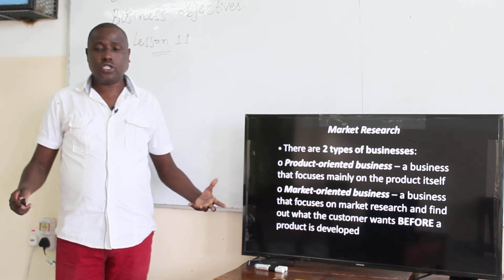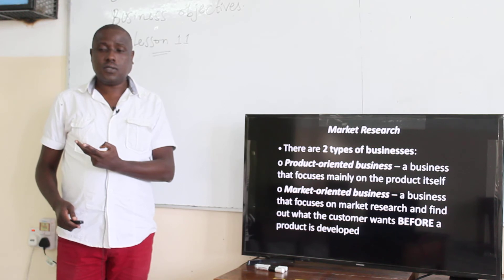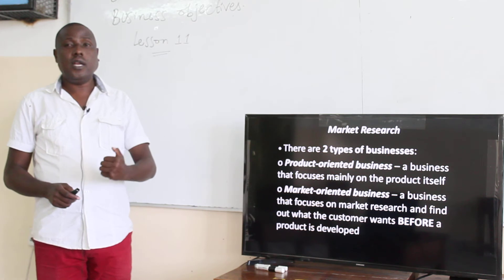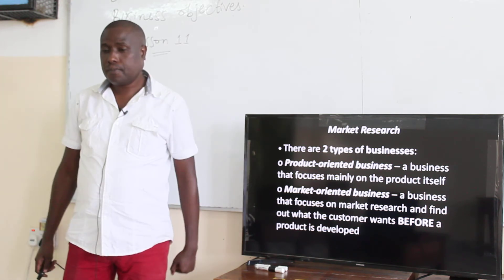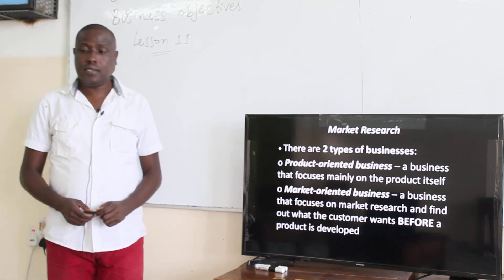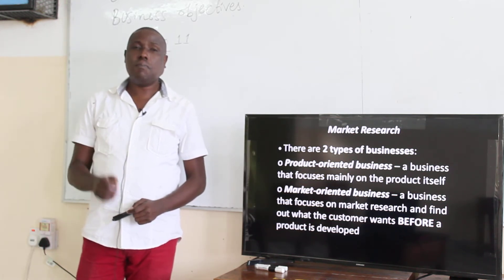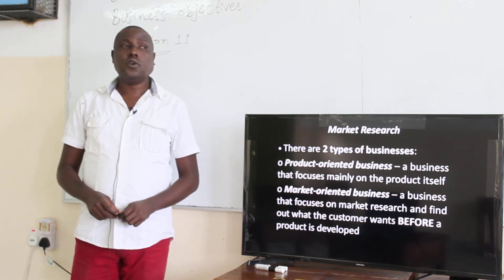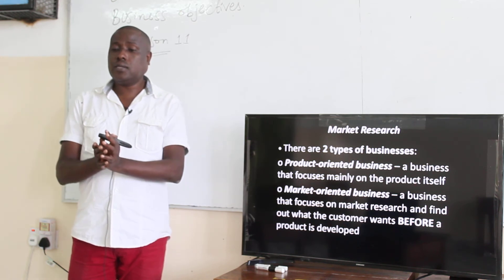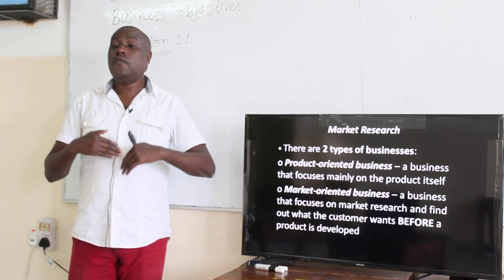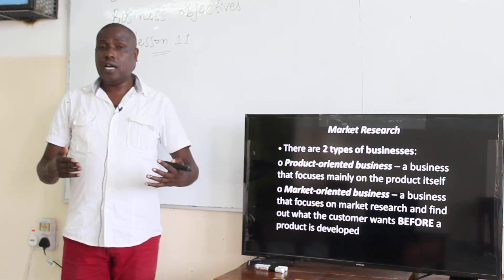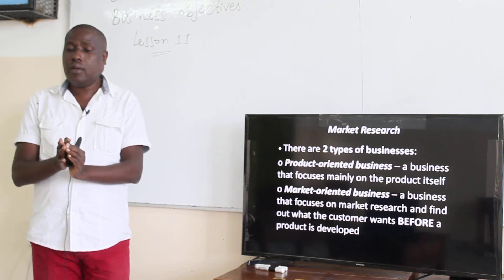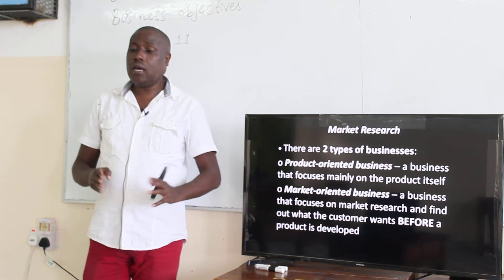When you talk about market research, there are two types of businesses. One is called a product-oriented business — a business that focuses mainly on the product itself. Someone designs the product, feels it is the best product, feels it will offer solutions to some problems, then they market it.